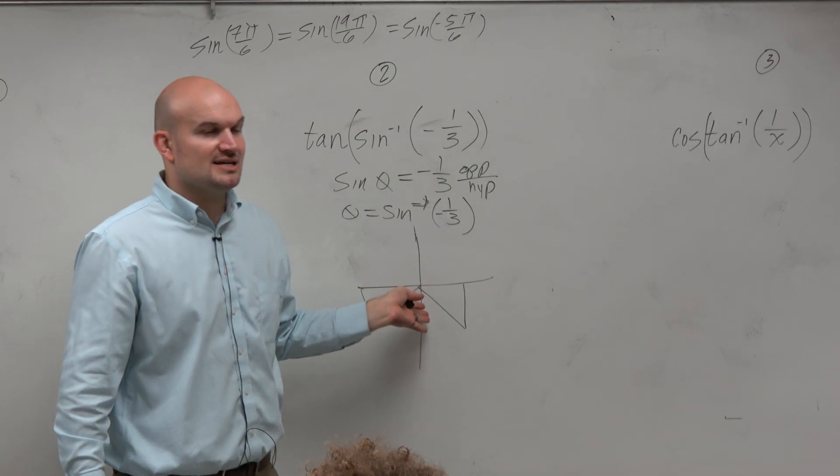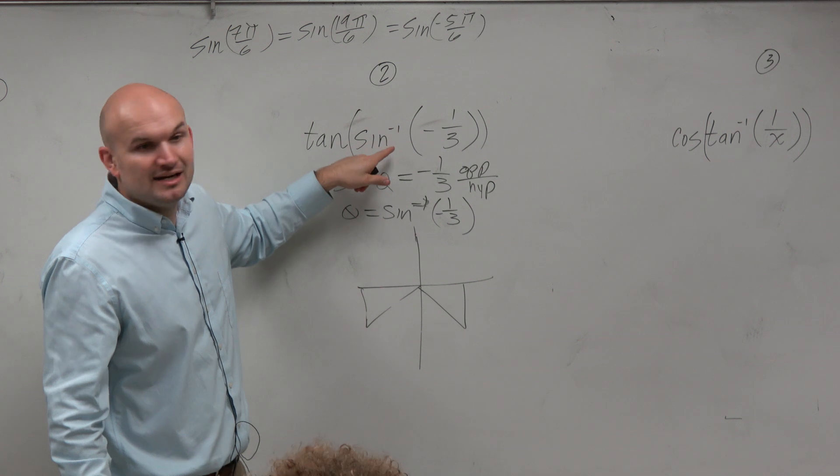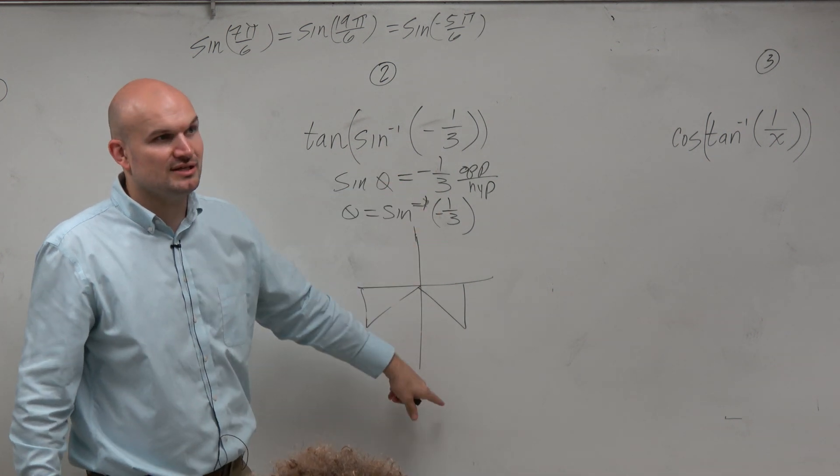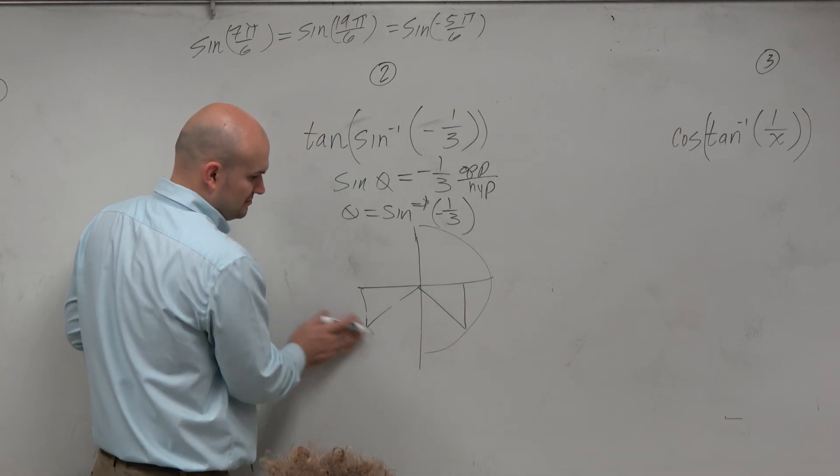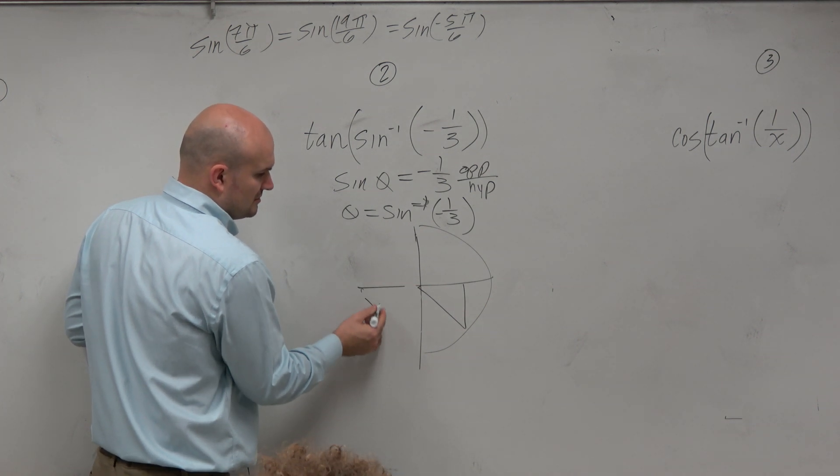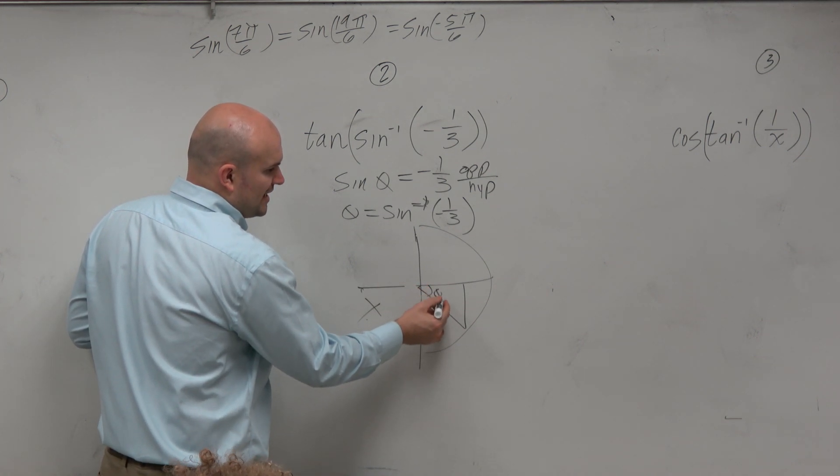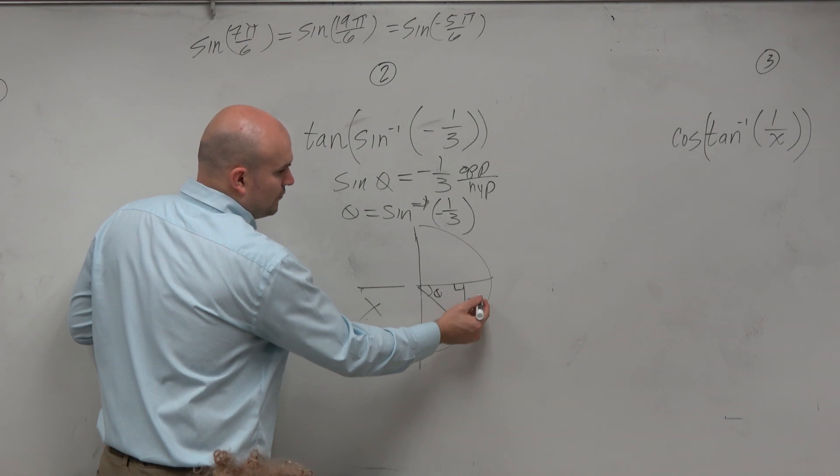But do we already know which quadrant this has to be in? Yeah, because the sine inverse we know is restricted to the first and the fourth quadrant. So it has to be this triangle. So here's our theta. Here is negative 1. Here's 3.